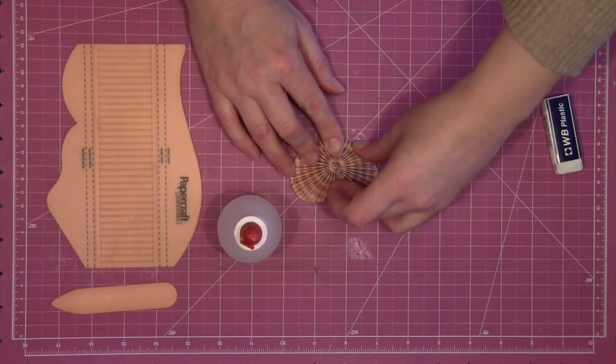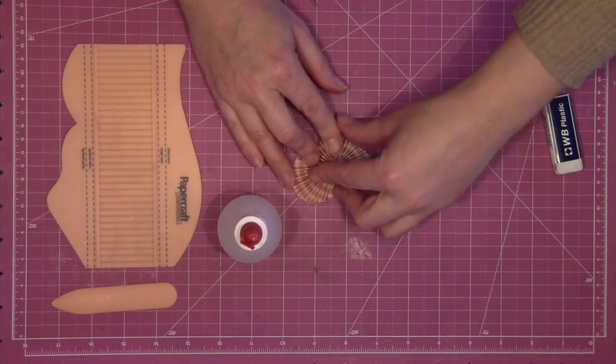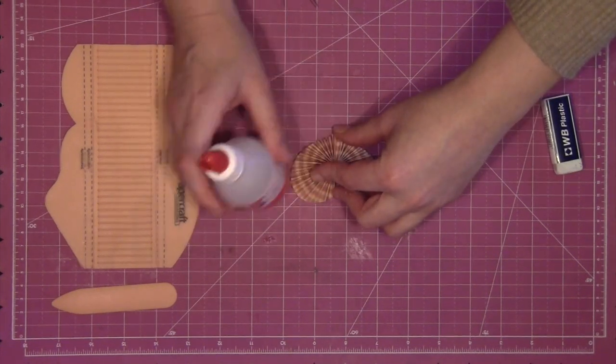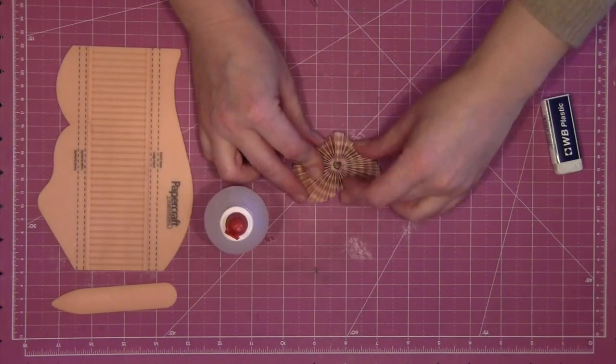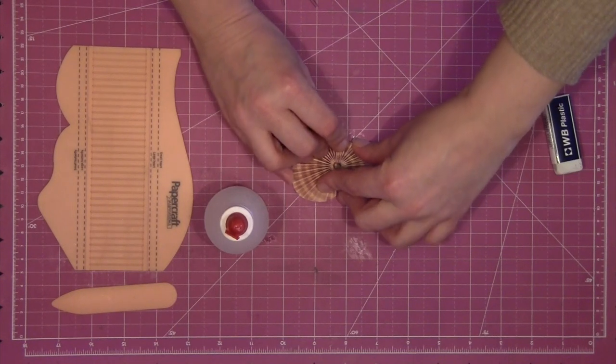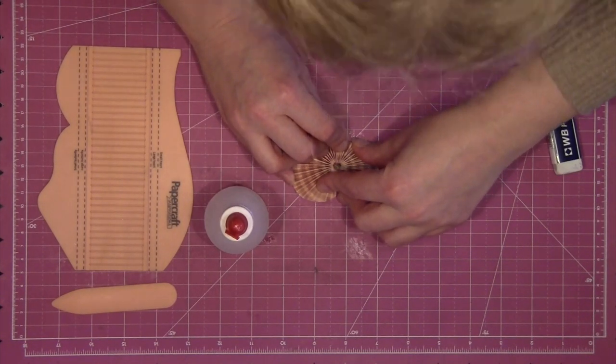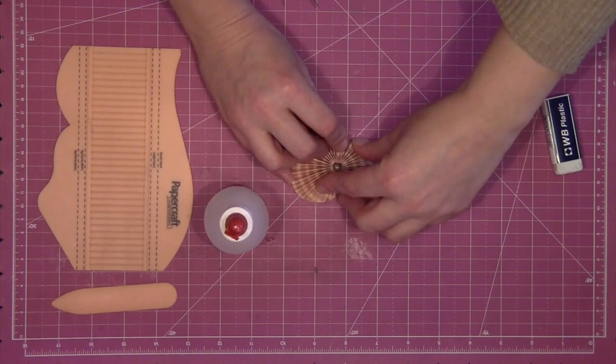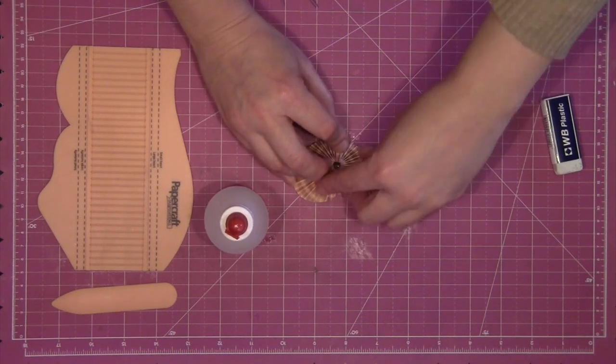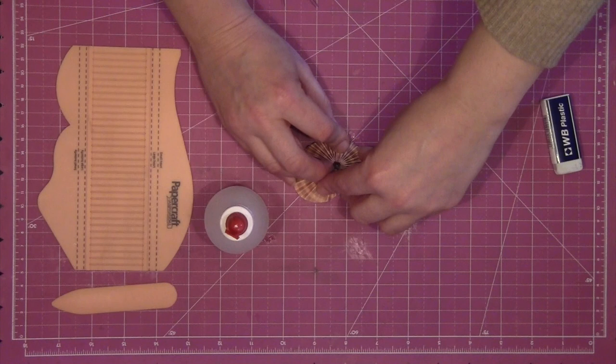Once it gets to a certain stage of dryness so that you can move your hands without it popping out, you can put a weight on it something like a glass or even the bottle of glue can help secure it while it dries fully. But in the first instance you've just got to be patient and hold it in place while the glue starts to dry.